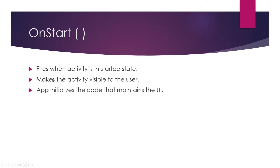After onCreate is finished, the system calls the onStart callback method. When the activity enters the started state, onStart makes the activity visible to the user as the app prepares for the activity to enter the foreground and become interactive. The app initializes code that maintains the UI. The onStart callback completes very quickly, and once it finishes the activity enters the resumed state and the system invokes the onResume callback.